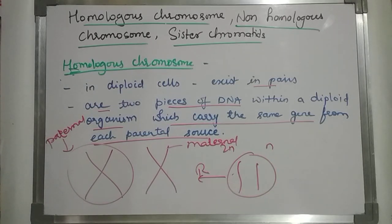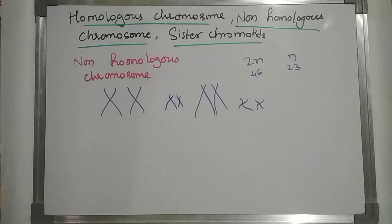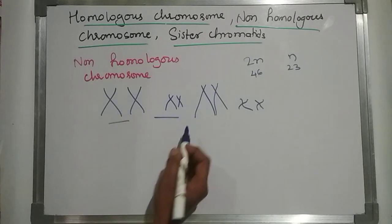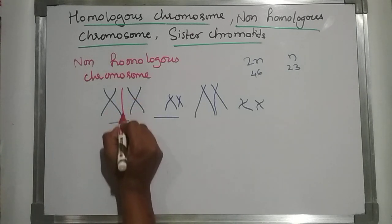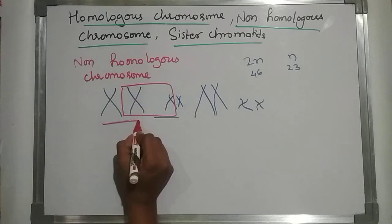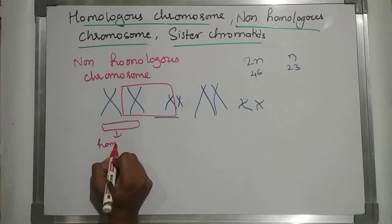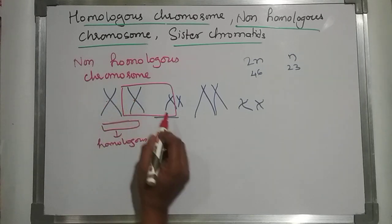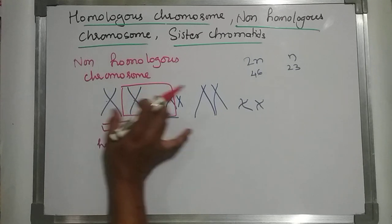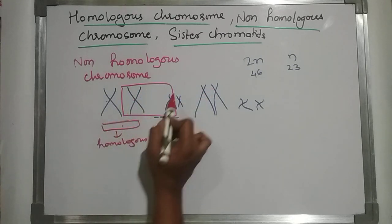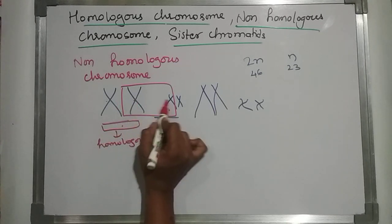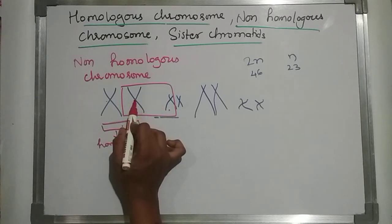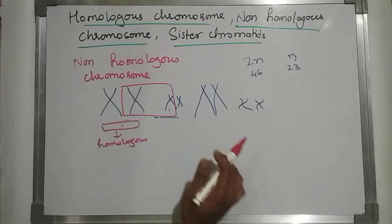Non-homologous chromosomes are just two different chromosomes and do not code for the same trait. Non-homologous means one chromosome from this pair and one chromosome from another pair — they are called non-homologous chromosomes. They will not look the same; the centromere position will be different and the staining pattern will be different.